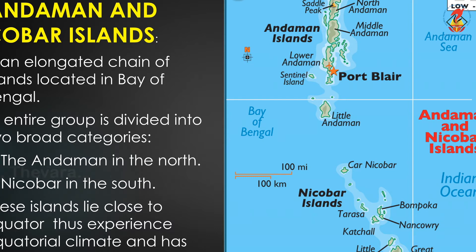The Andaman and Nicobar Islands lie in the Bay of Bengal. They form an elongated chain of islands, divided into Andaman in the north and Nicobar in the south. Being close to the equator, they experience an equatorial climate and have thick forest cover.